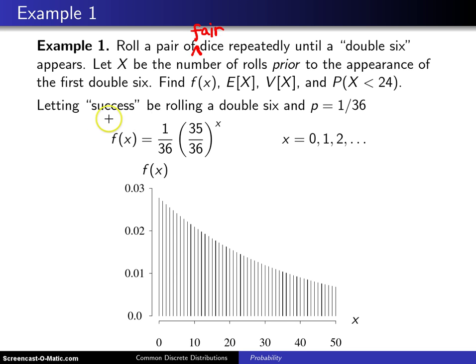If you let success in each Bernoulli trial correspond to rolling a double 6, then the probability of success on each one of those trials, that is each roll of a pair of fair dice, is 1/36.